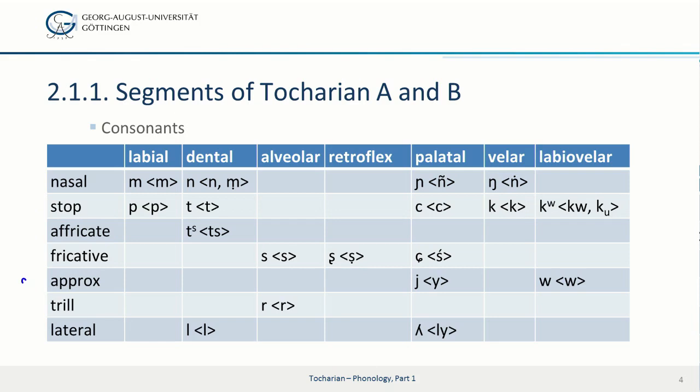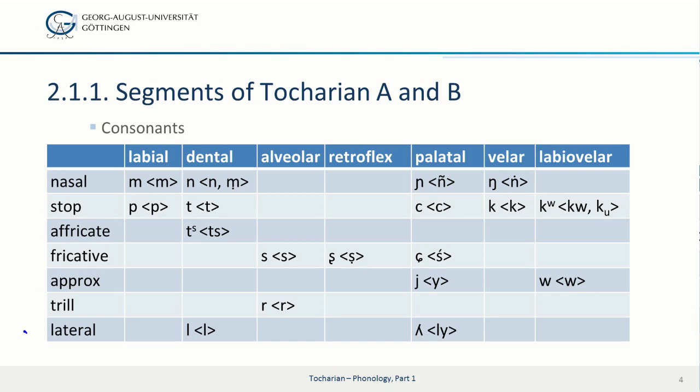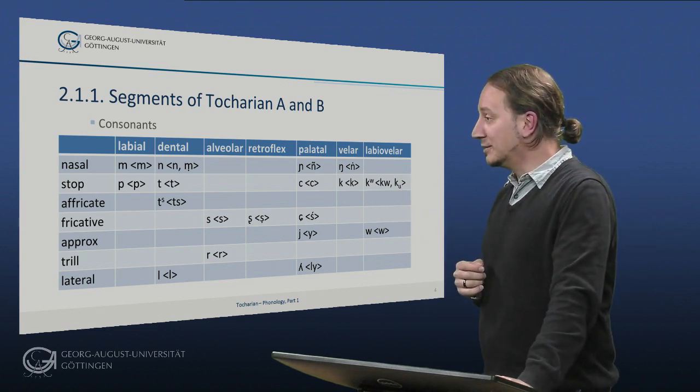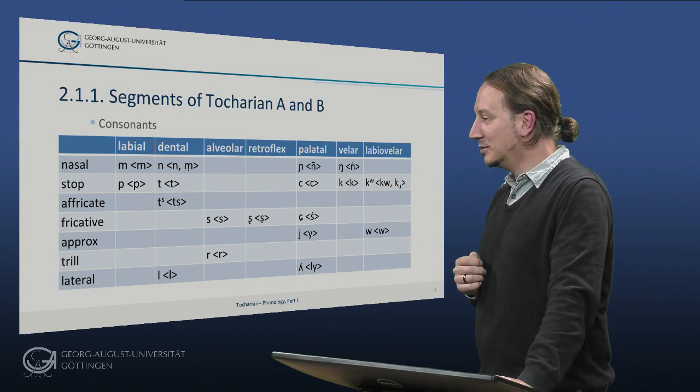Then moving on to the approximants, we have Y and W. Then we have an R sound and very likely this was a trilled R, so an R. And finally, we have two laterals, the one is a plain L and the other is its palatal equivalent, namely a Lieu. So this is the inventory of both Tocharian languages, the consonant inventory.